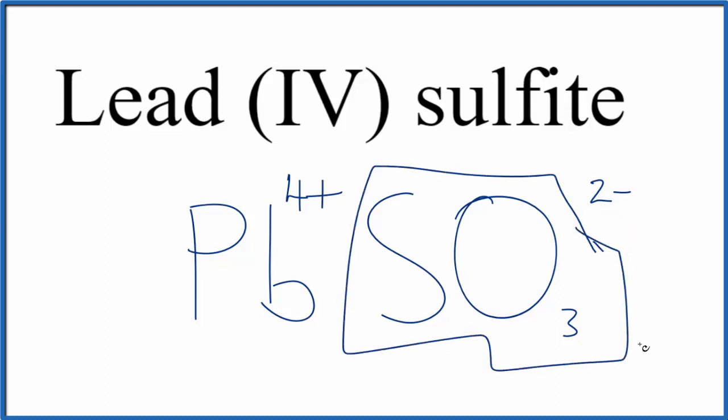We'll need two of these sulfite ions, the 2-, two times 2- is 4-, that balances out the lead, the 4+, to write the formula for lead four sulfite.